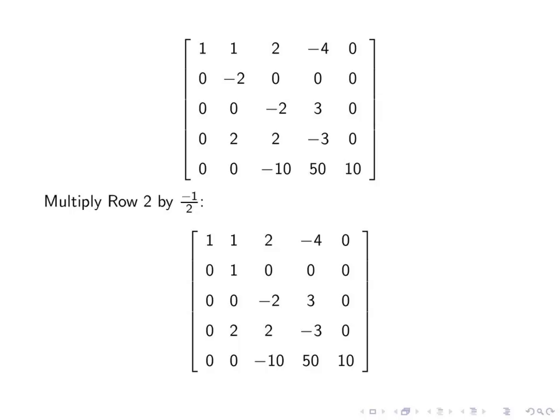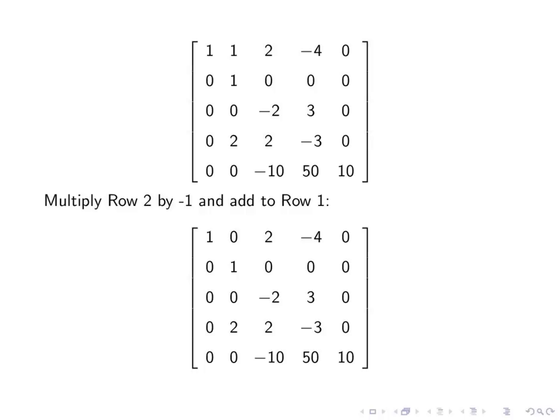Now we have to get rid of the one and the two in the second column. And to do so, multiply row two by negative one, add to row one. Multiply row two by negative two, add to row four, the second column.